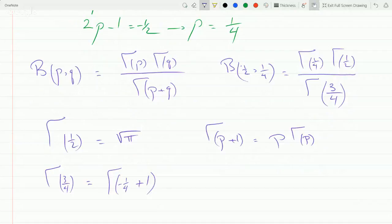Gamma of three fourths is just equal to minus one fourth gamma of minus one fourth, which we already discussed how to get gammas of negative numbers.